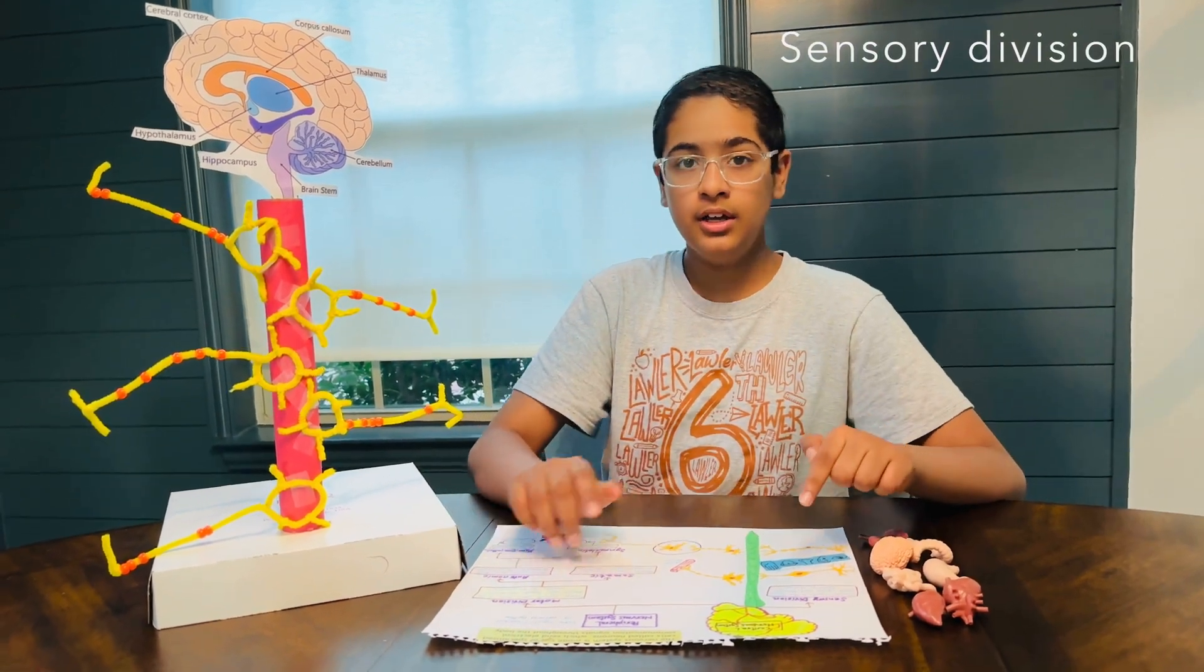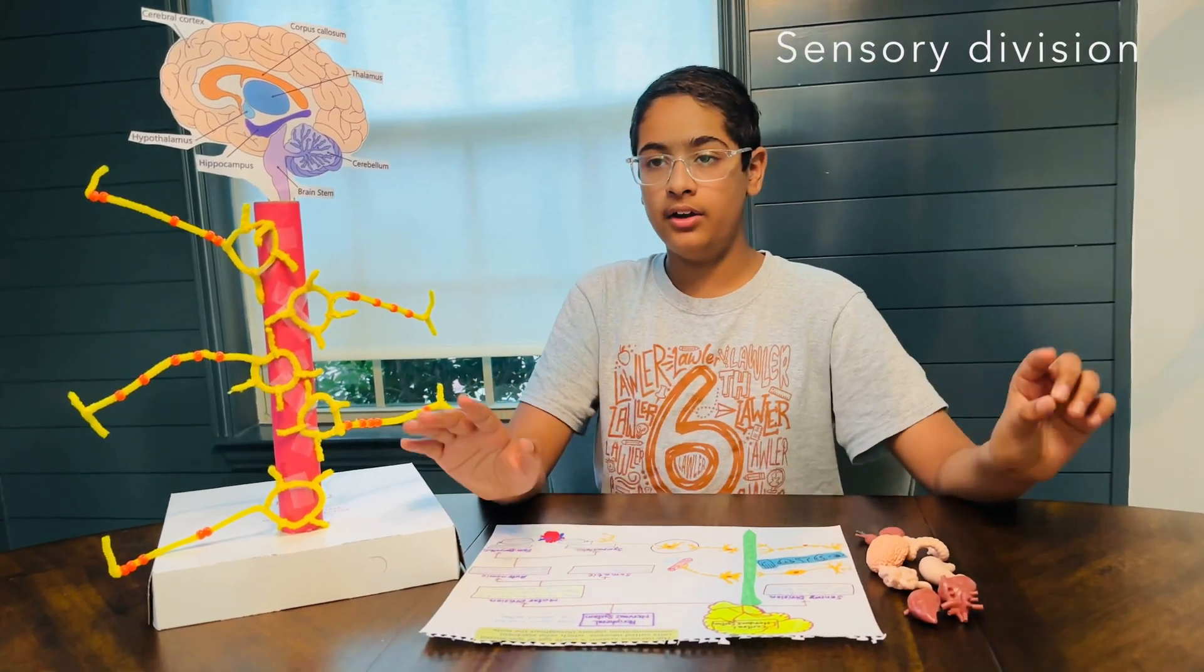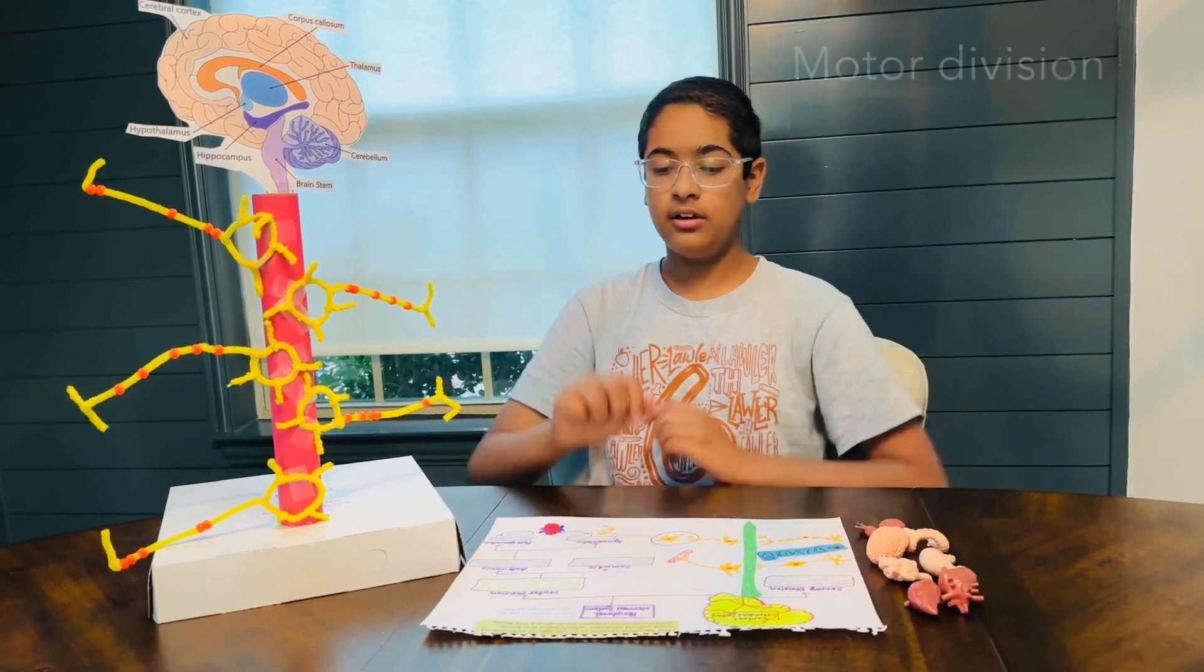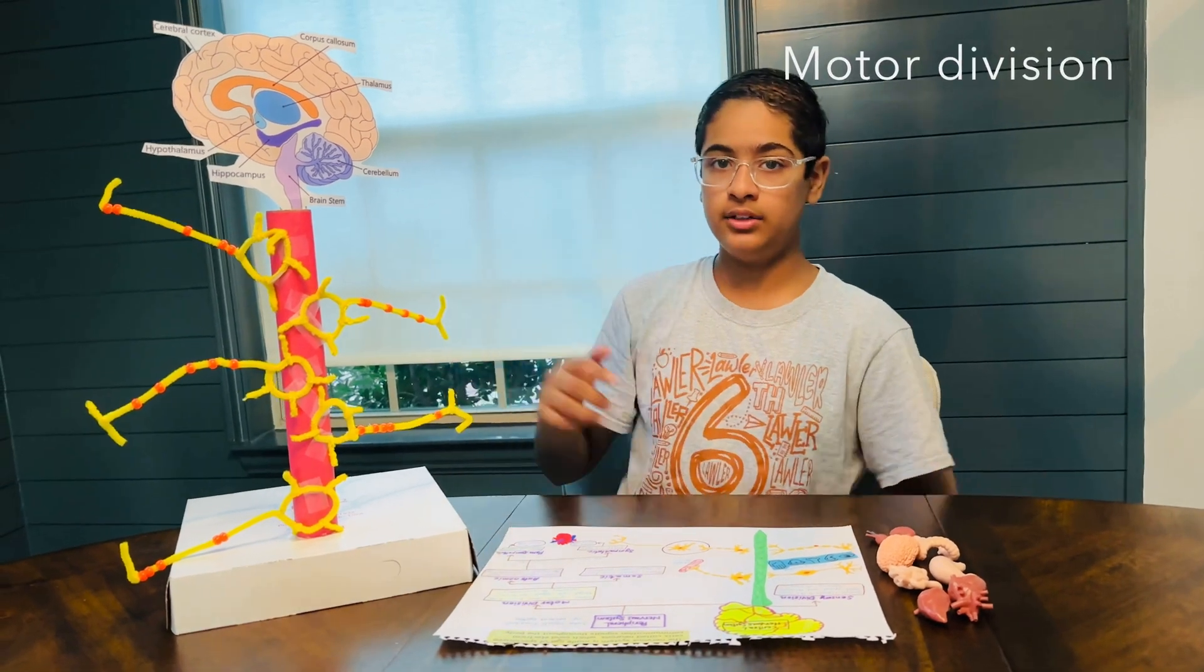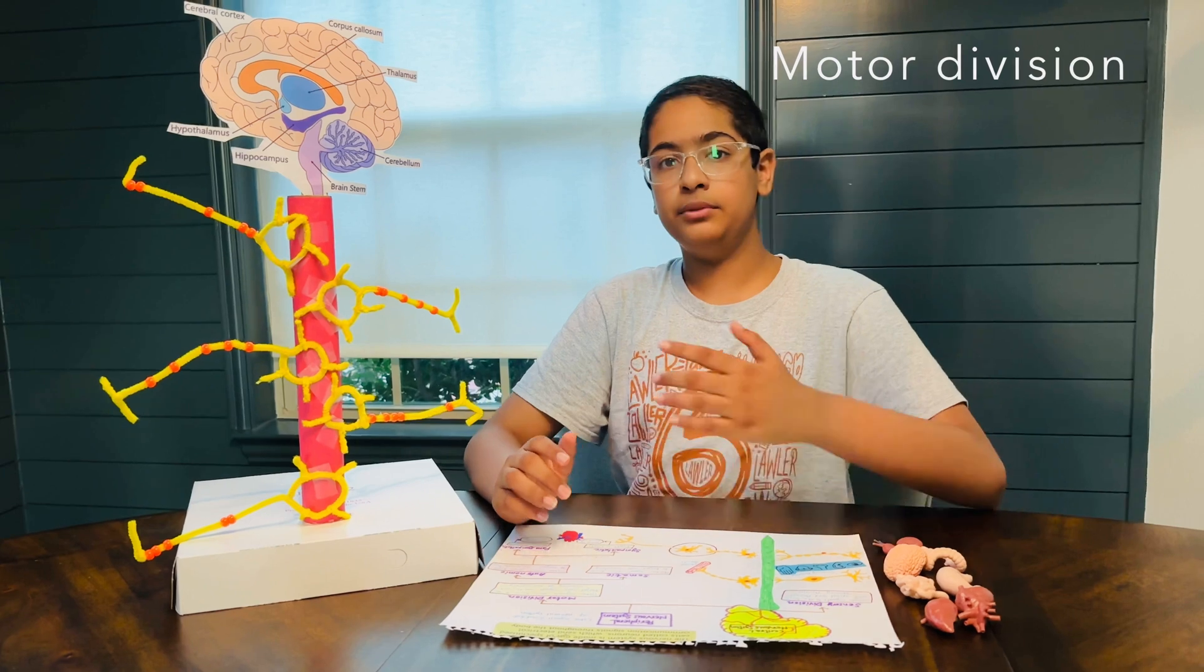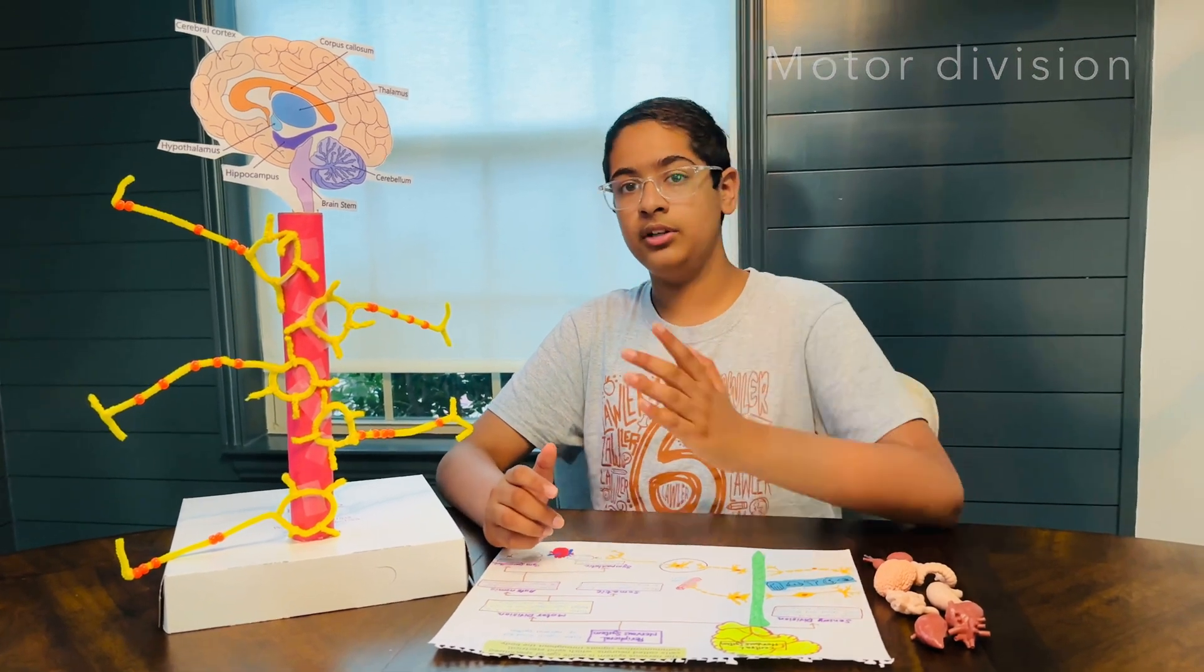The sensory division detects the surrounding area in the environment and sends the signals back up into the brain. The signals then are transmitted from the brain to the other nerves in the body and allow the body to be able to adapt to the environment. This is known as the motor division.